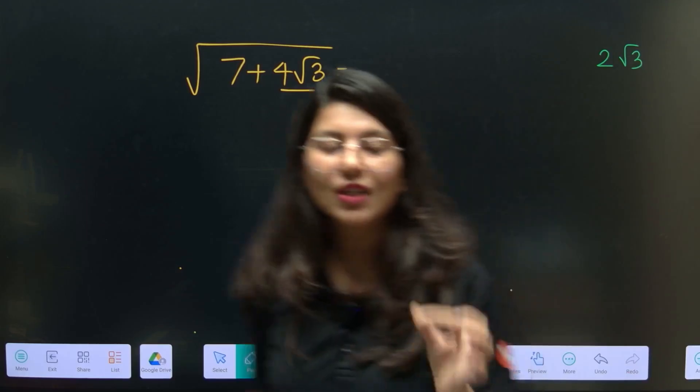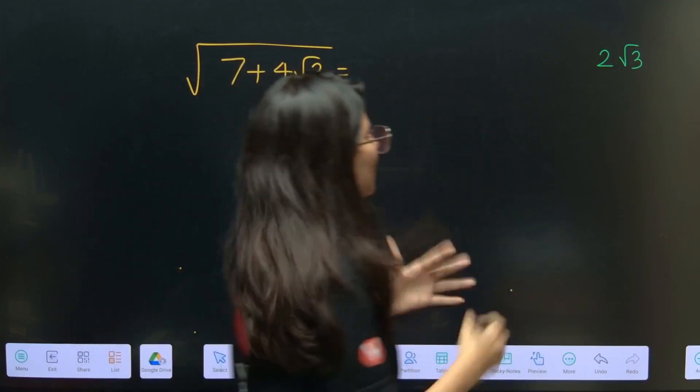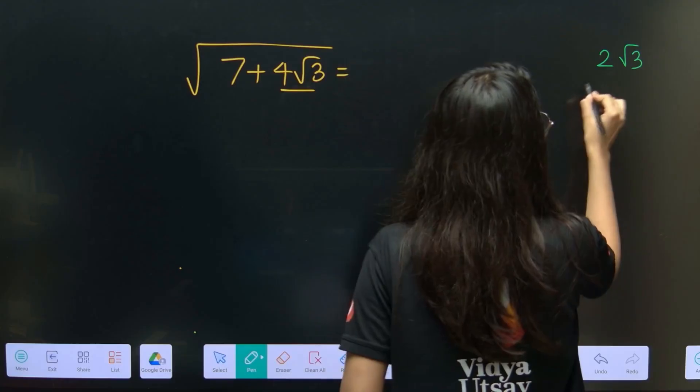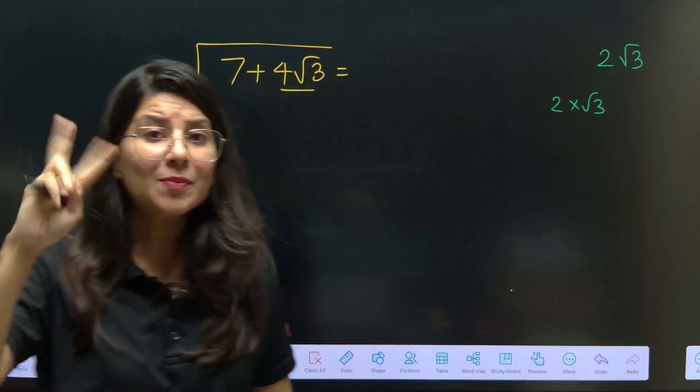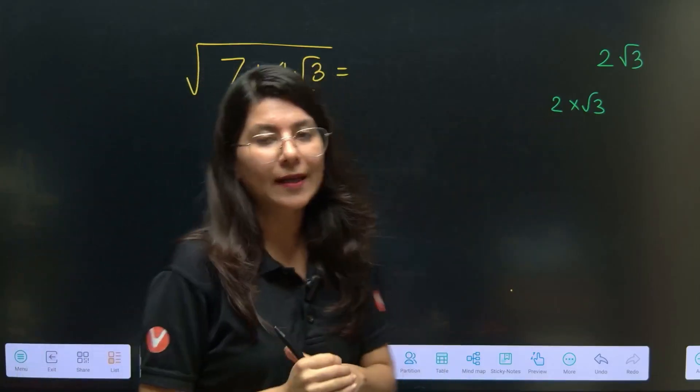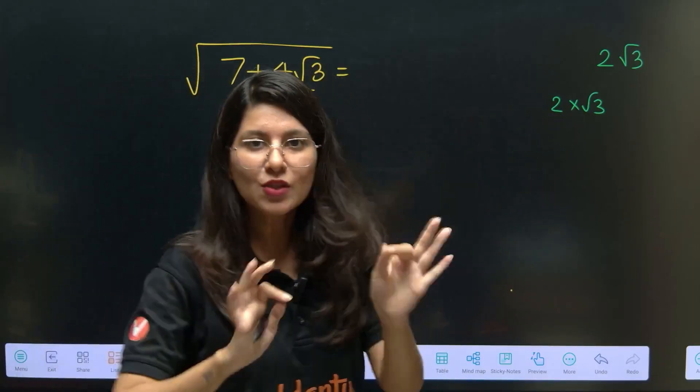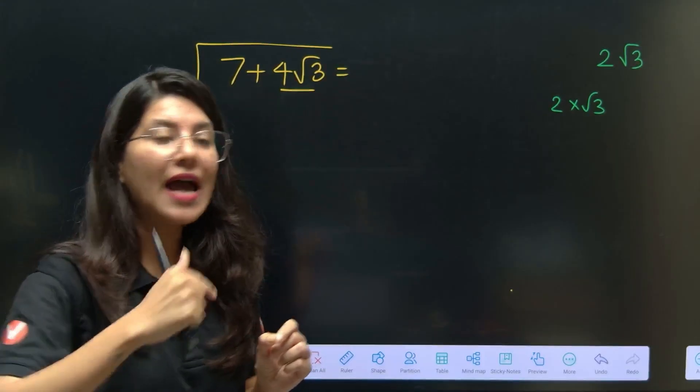Now this 2 root 3 you have to break it into 2 parts. Breaking 2 root 3 into 2 parts will be 2 multiply root 3. Basically, you need to split, remember splitting the middle term. Same thing, 2 multiply root 3. You need to hit and trial. So first option is 2 and root 3. Now what you have to do? You have to square and add. 2 and root 3, square and add.